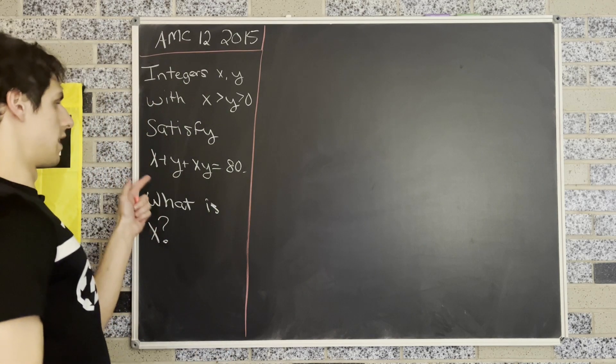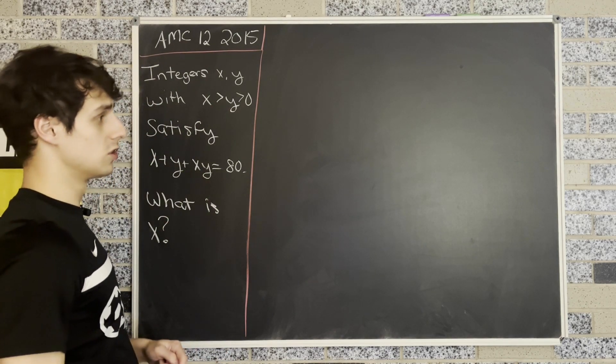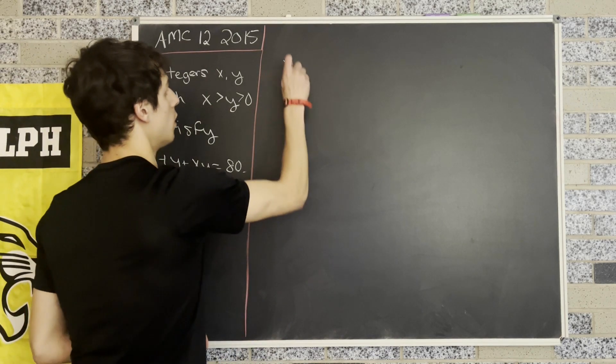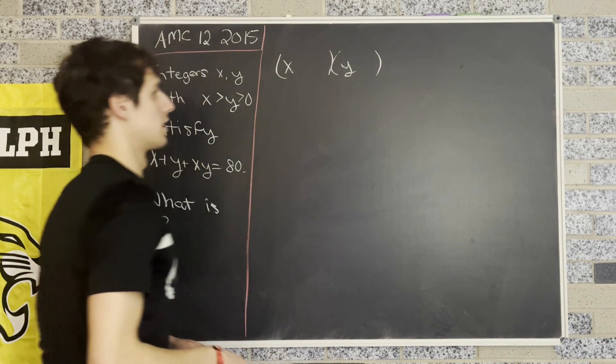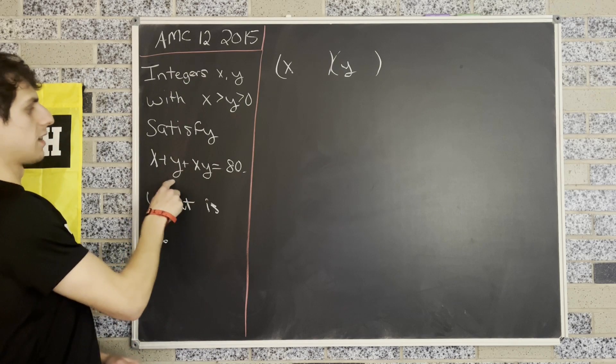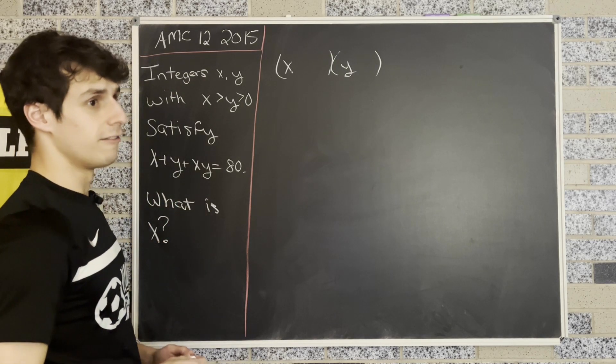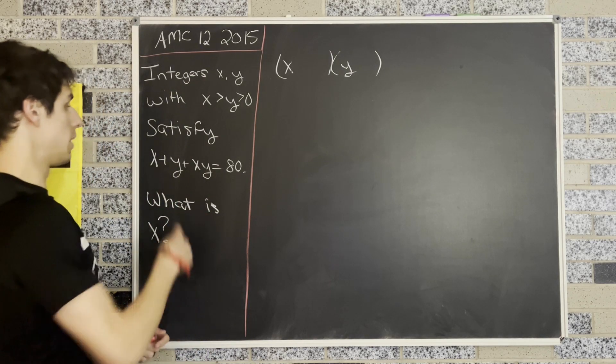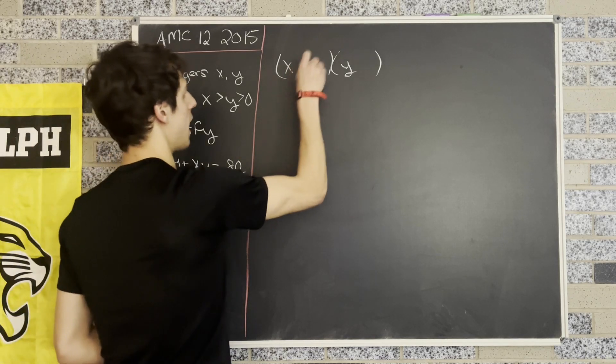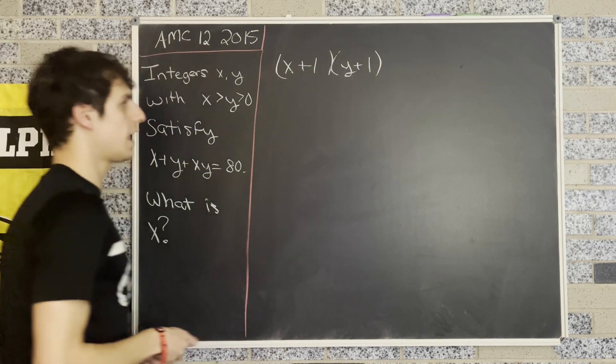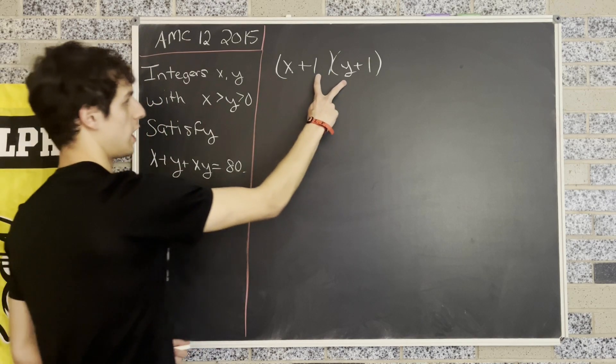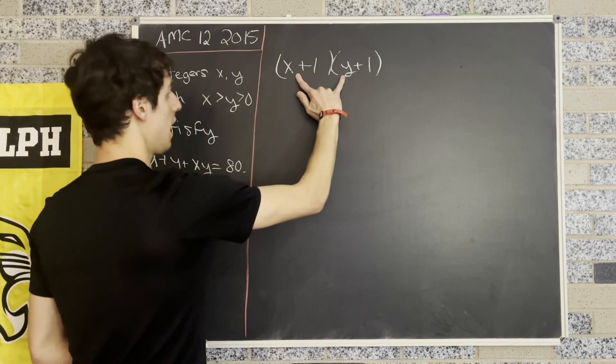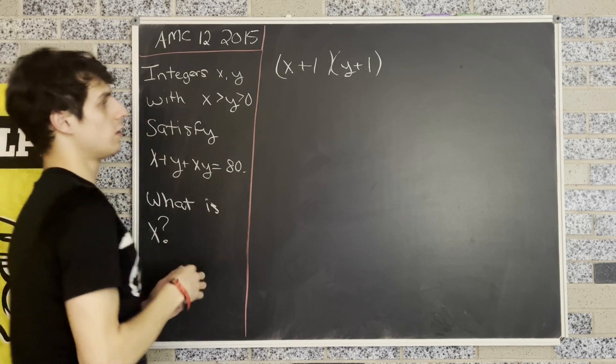First, what I'm going to notice is that this left-hand side factors pretty nicely into something that splits up x and y. That's because we have an x, a y, and an x times y factor here. And we can notice pretty quickly that we can just add 1 to each of these factors to get x, that's x times 1, y, which is y times 1, and then xy, which is x times y. And this is all equal to 80.